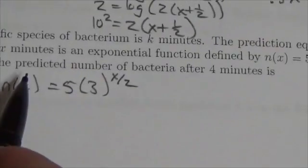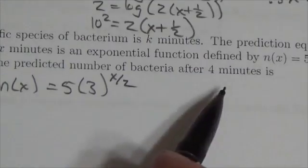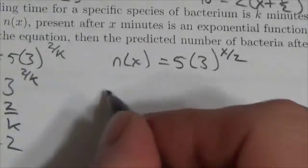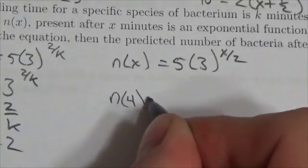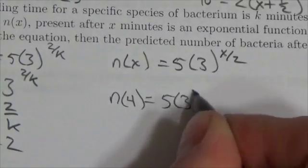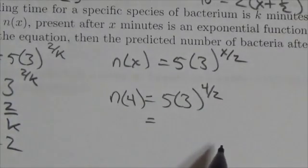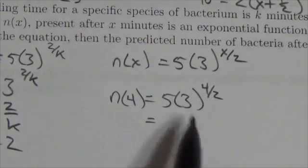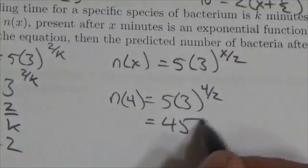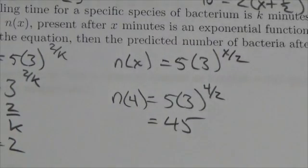Now I've got to find the predicted number of bacteria after 4 minutes. Well that's just now a matter of evaluating that. So n of 4 is going to equal 5 times 3 to the 4 over 2. 4 over 2 is 2. 3 squared is 9 times 5 is 45. That's the number that they're looking for.